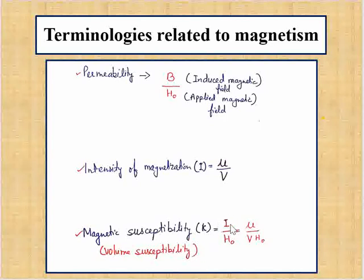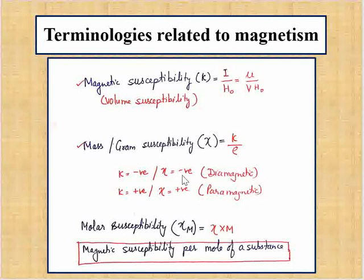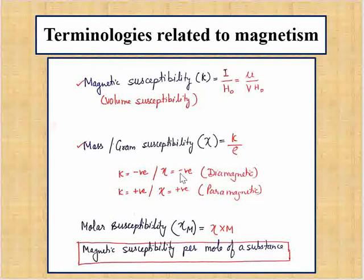If we divide volume susceptibility by the density of the substance, it is known as mass or gram susceptibility. If the mass susceptibility has a negative value, the substance is diamagnetic. If the value is positive, it is a paramagnetic substance.